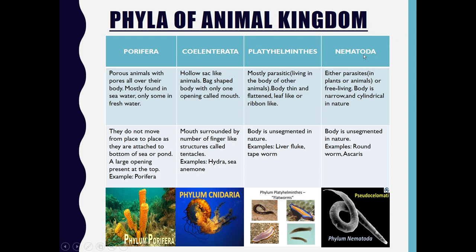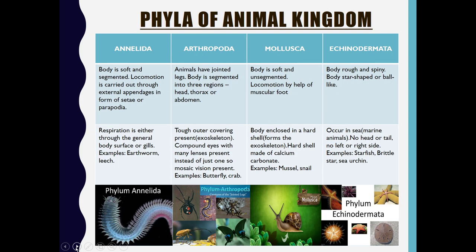Coming to Phylum Nematoda: organisms here are either parasites or free-living. Their body is narrow and cylindrical in nature, and they also have an unsegmented body. Examples are the roundworm and Ascaris.